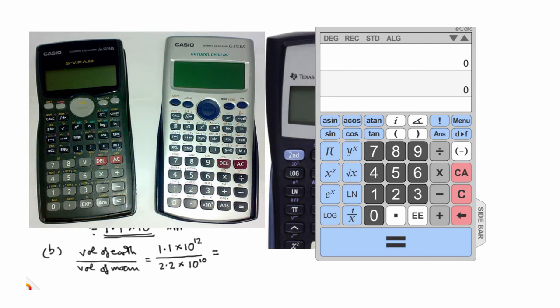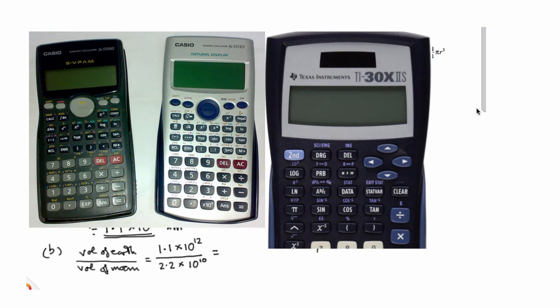Let me show you different calculators. This one, that button EXP means times 10 to the power. And this one, there's times 10 to the power. And sometimes it'll be an EE button. And this Texas instrument calculator is quite awkward. You have to press second function button to get hold of this EE button. But again, this EE button means times 10 to the power. So let's go back to our calculation now.